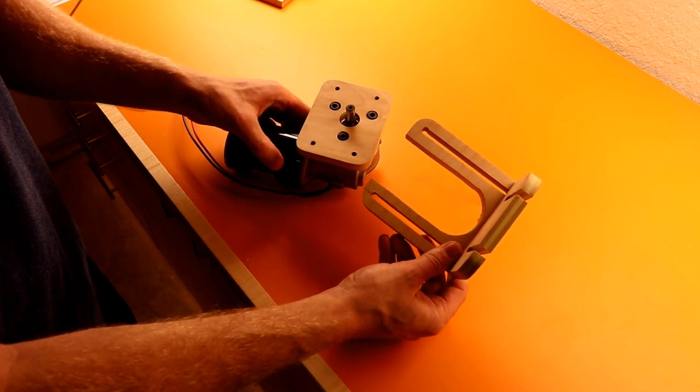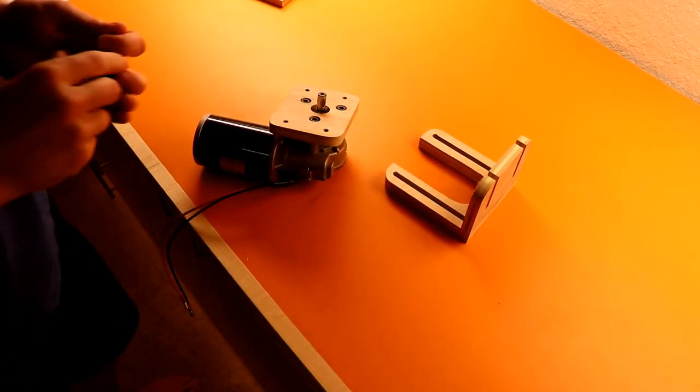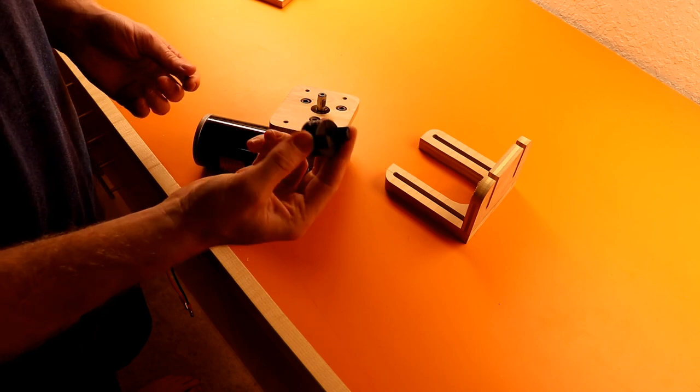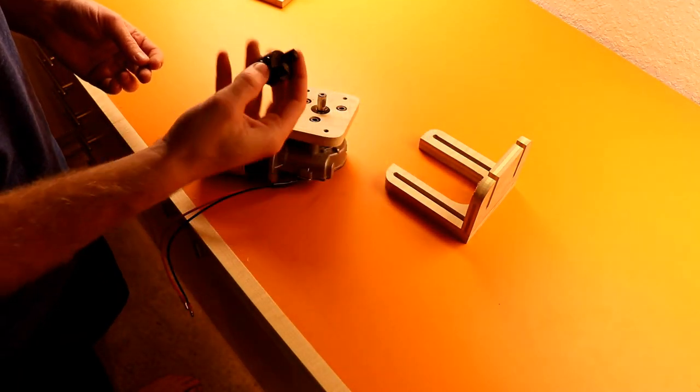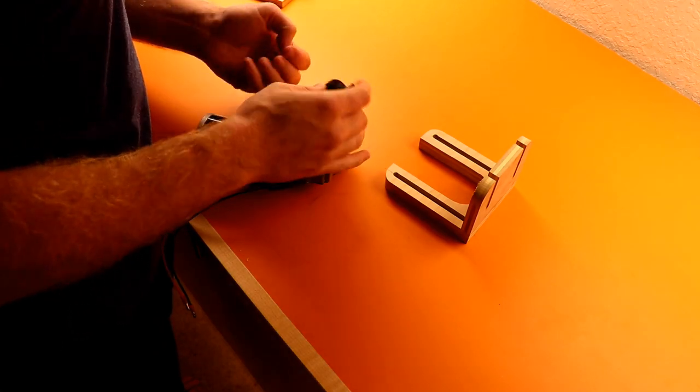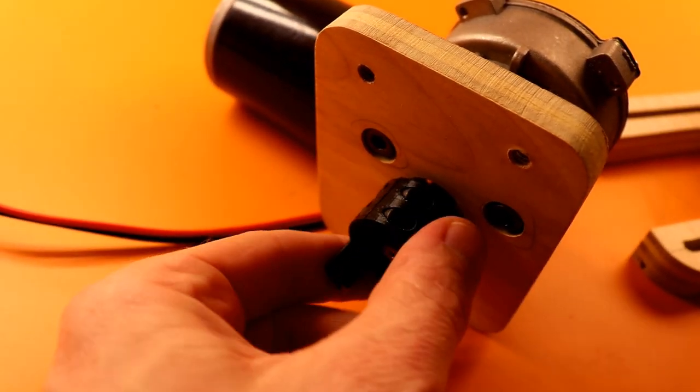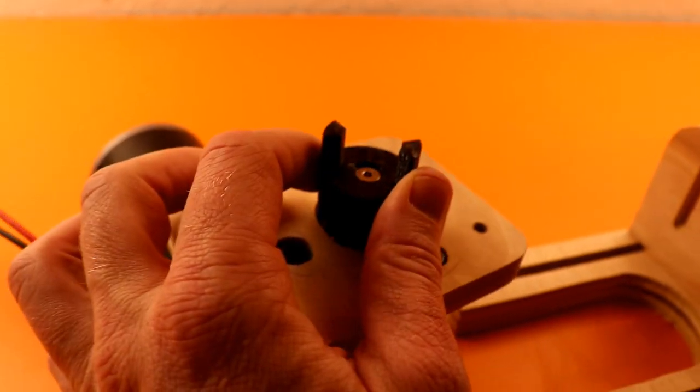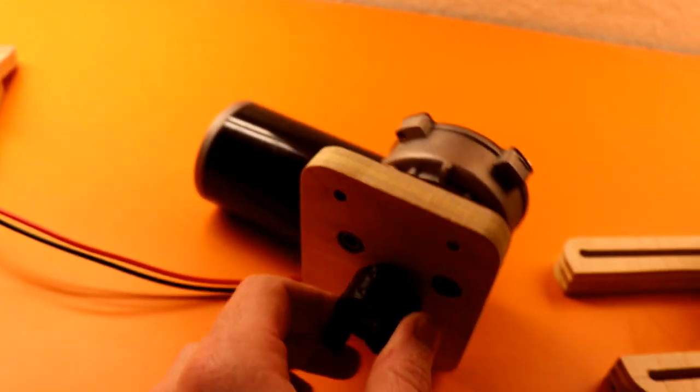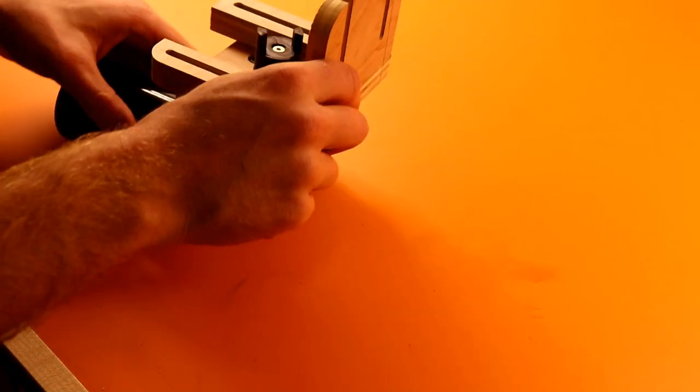So let's get this thing assembled. First thing we have to do is put the coupler back on. It's 3D printed. Two socket head cap screws going into two nuts that are captive over there. And then that's the flat head screw that goes into the shaft of the motor. So now we have that. Now we have to put this on.